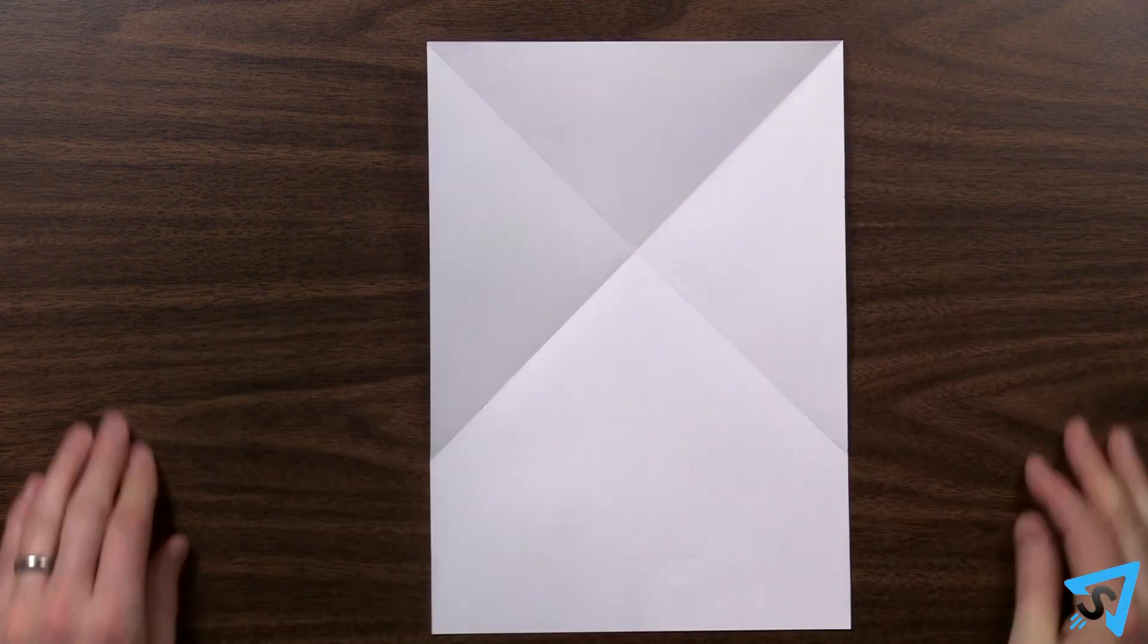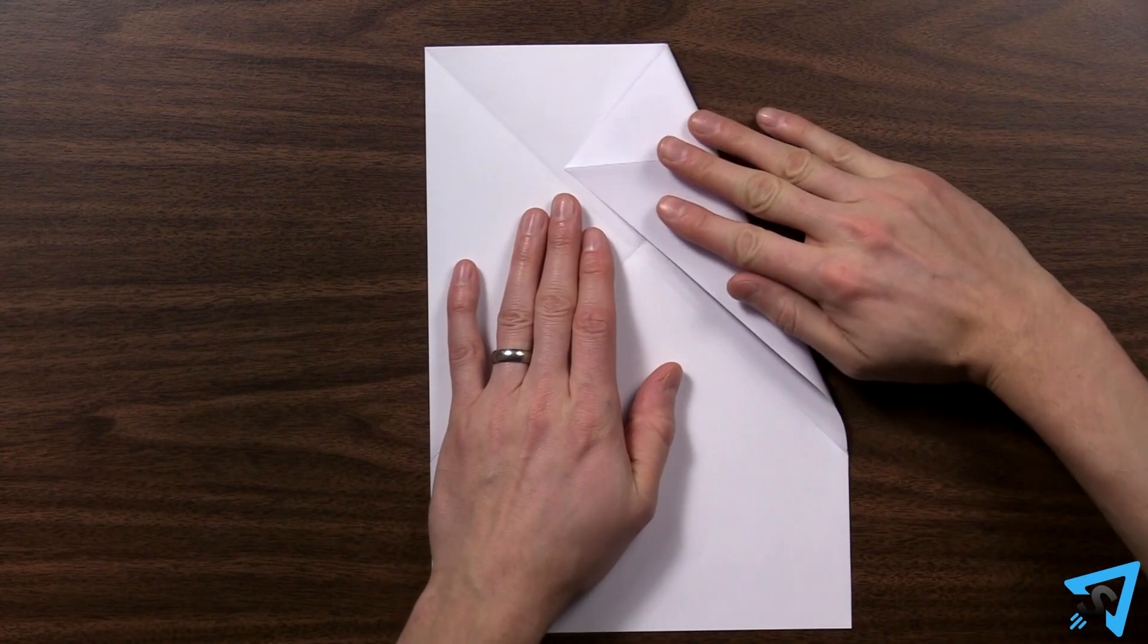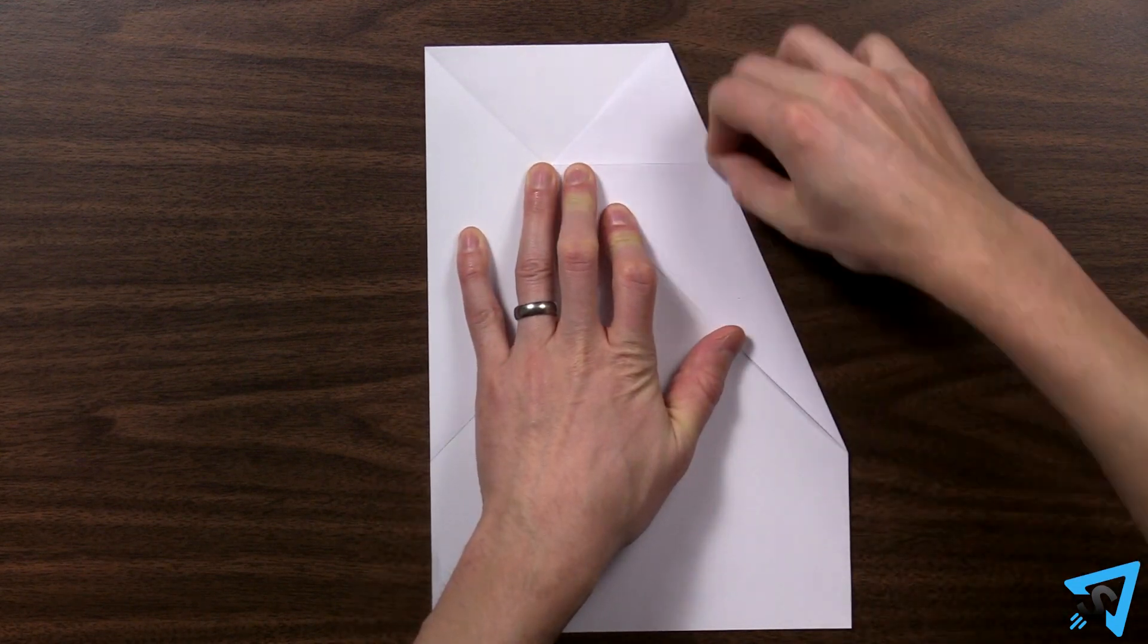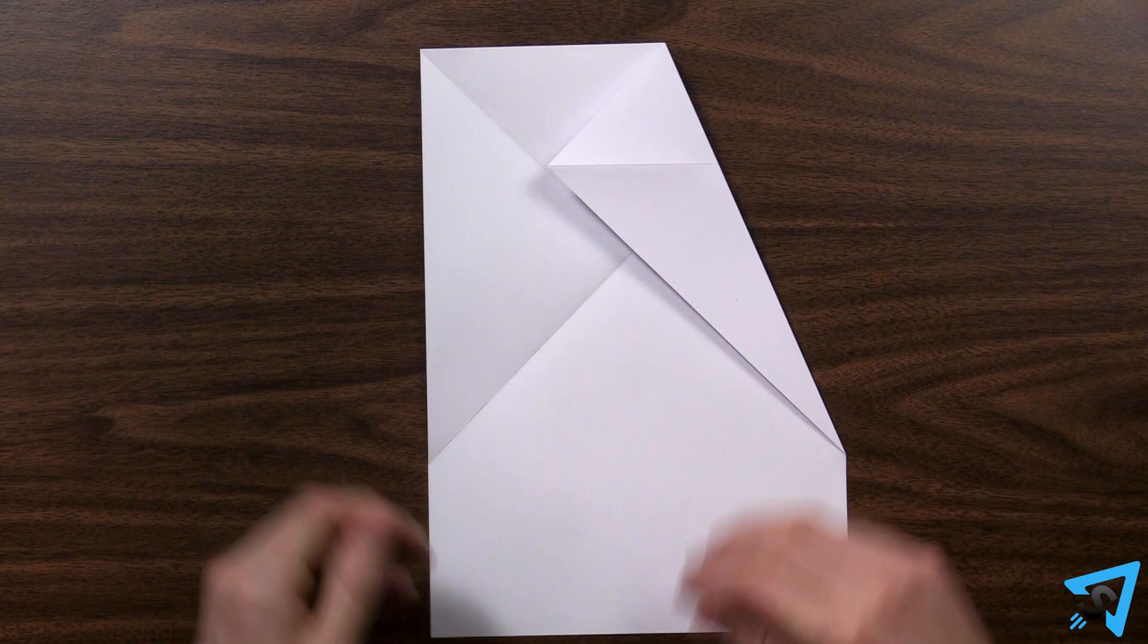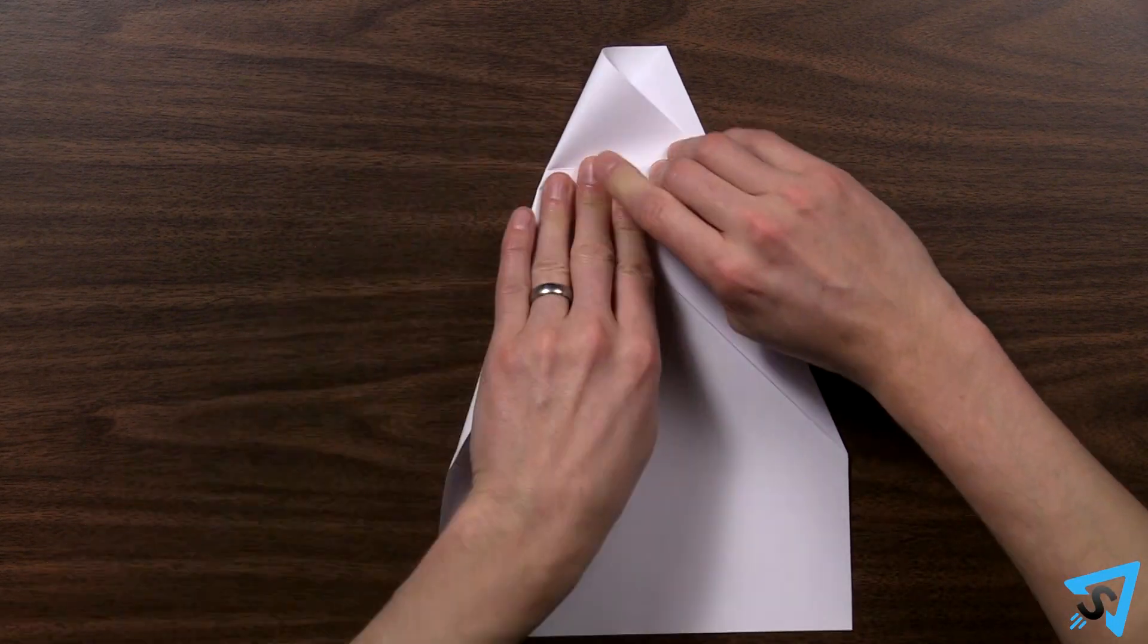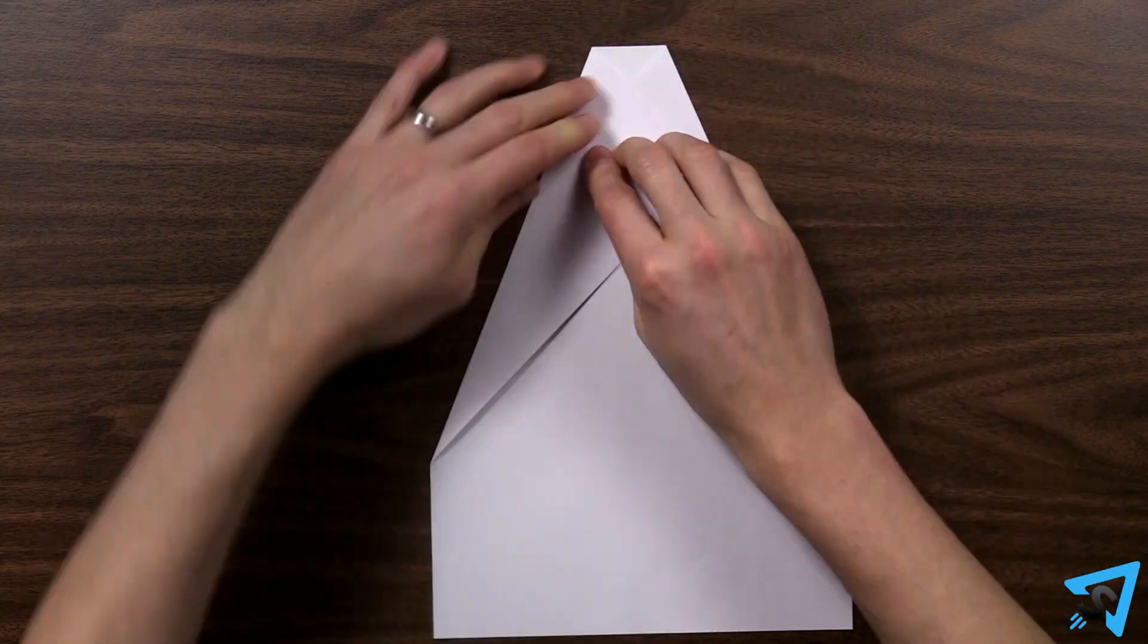Open that fold, and now, using the folds as guide marks, fold the top half of each side edge down and across so it is just a millimeter or two above the guide mark. This will prevent the layers from bunching up during later folds.